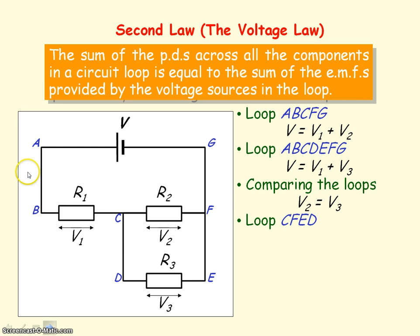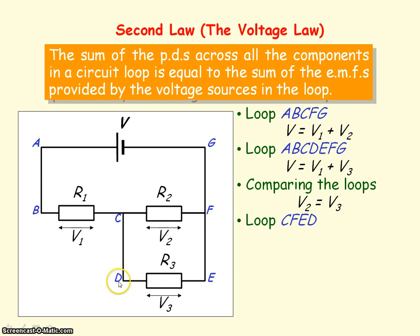If we now consider circuit loop C-D-E-F, going round clockwise, the components are R2 and R3. So the sum of the PDs will be V2 minus V3, because if we consider the current through R2 and R3, the current will go from C to F for R2, and for R3 it will go from D to E. So the voltage is in the opposite direction to the circuit loop.